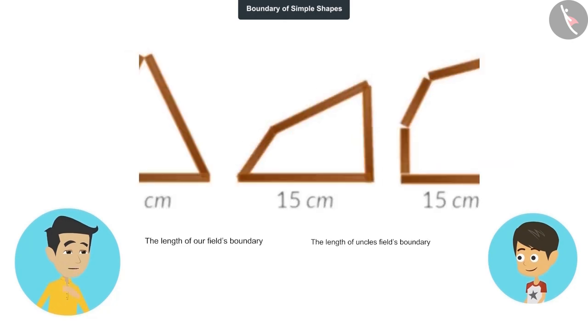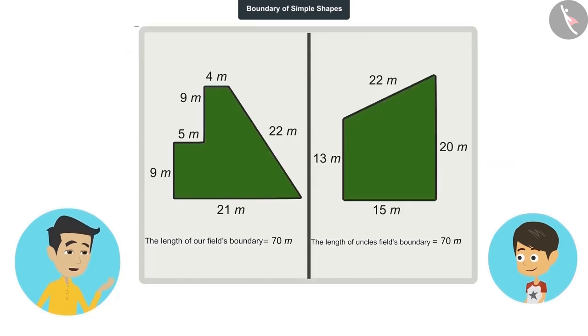You can find it by looking at these fields also. Look, our farm has six edges while your uncle's field has four edges. But the measurements of the boundaries of both fields is the same. Yes, I had not paid attention to this.